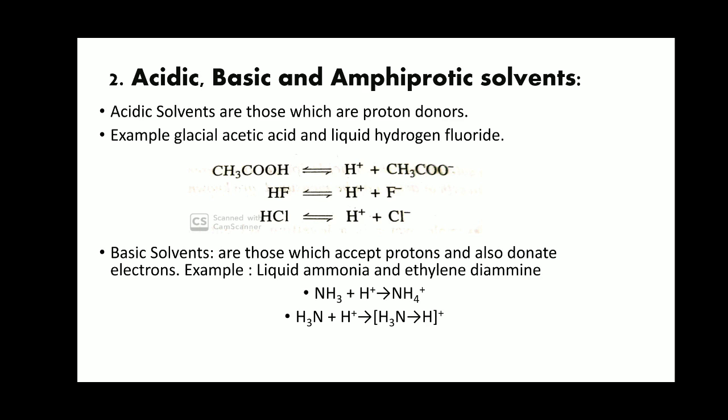The second classification is acidic, basic, and amphiprotic solvents. Acidic solvents are those which are proton donors. For example, glacial acetic acid, liquid hydrogen fluoride, and hydrochloric acid are all proton donors, which is why they are known as acidic solvents. Basic solvents are those which accept protons and also donate electrons, for example liquid ammonia and ethylenediamine.